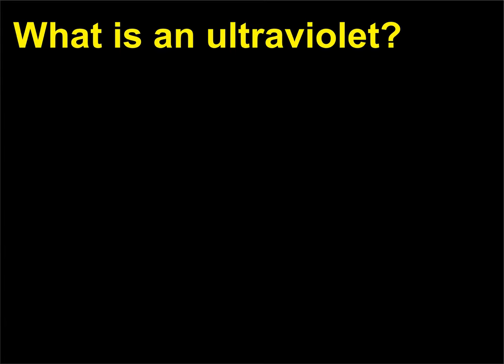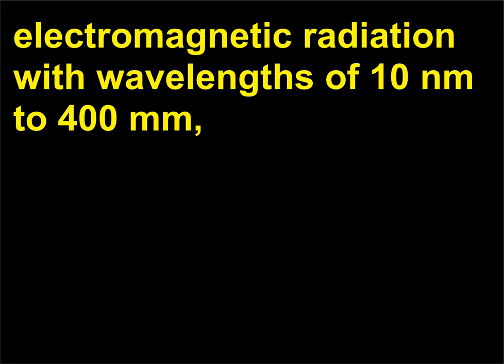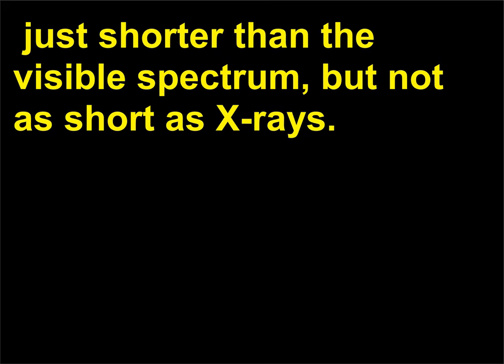What is ultraviolet? Electromagnetic radiation with wavelengths of 10 nanometers to 400 nanometers — just shorter than the visible spectrum, but not as short as X-rays.